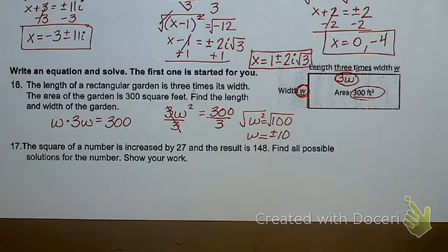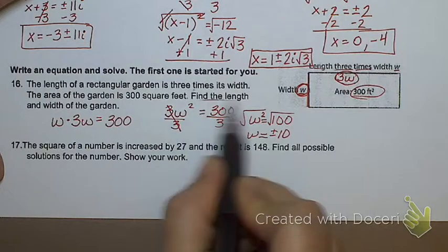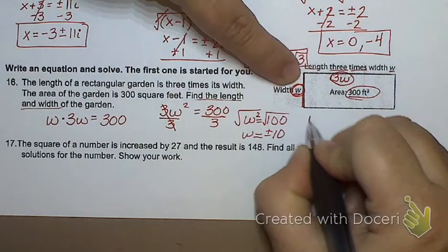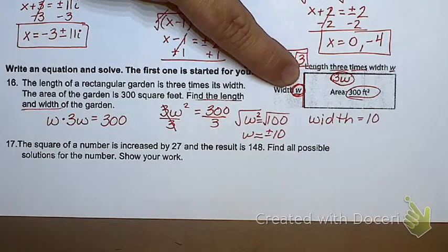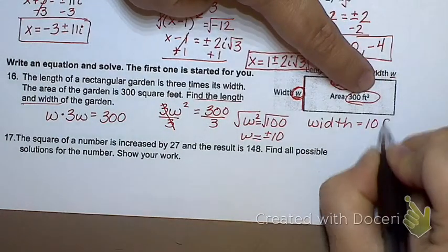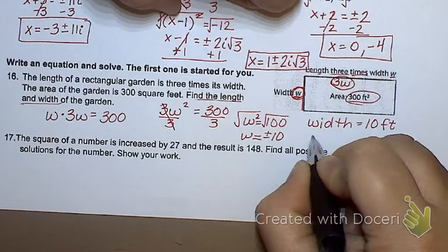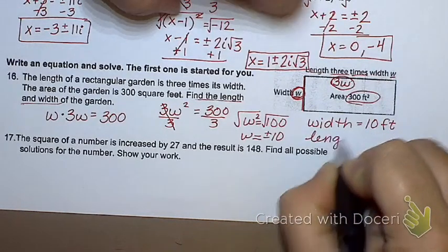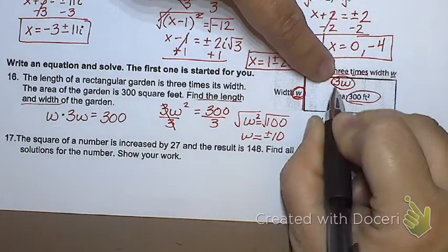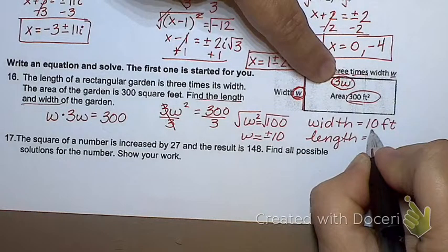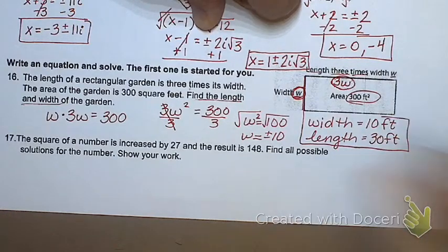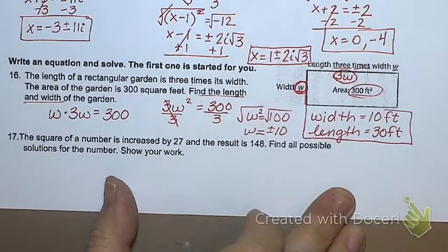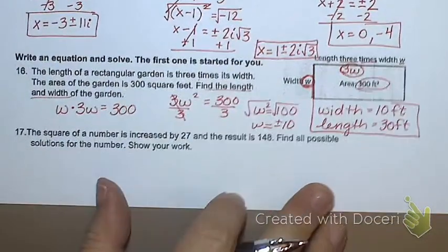So, I'm supposed to find the length and width. I know that the width is 10. 10 what? 10 feet because that's what we're talking about. So, what's the length? Isn't it 3 times the width? So, what's 3 times 10? 30. 30 feet.